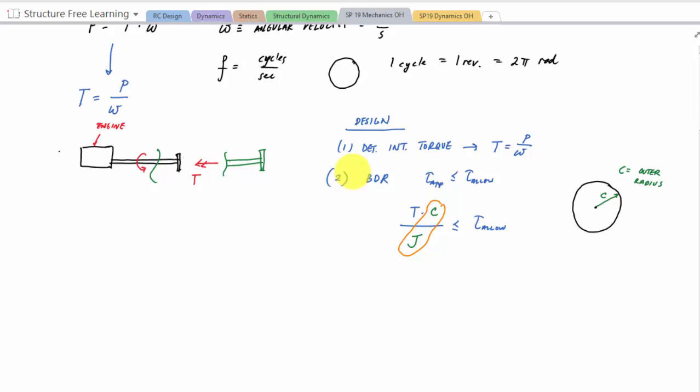And so really what we're trying to do is solve for this J over C or C over J. So if I rearrange this, like this would be T over tau allow less than or equal to J over C. And this J over C right here, sometimes depending on where you want to look, like sometimes manufacturers will publish this polar moment of inertia over the outer radius so that you can just choose based on this. And they call this a section modulus. And it has units of length cubed.